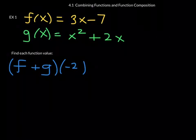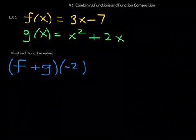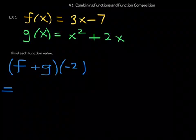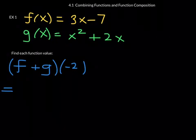In other words, negative 2 is your input. You find the output. So the way this plays out is pretty straightforward. You're going to want to take negative 2 and plug negative 2 into f, and also plug negative 2 into g, and then add your results.